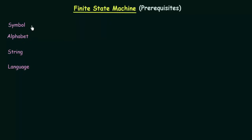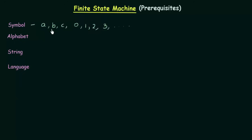Let's start with Symbol. What is a Symbol? Anything like A, B, C, 0, 1, 2, 3 — anything used to represent something is known as a Symbol. That is the most basic part of it.